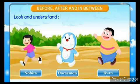Next, look at this picture. We can see Nobita is running before Doraemon. And Doraemon is running between Nobita and Jiyan. And Jiyan is running after Doraemon.